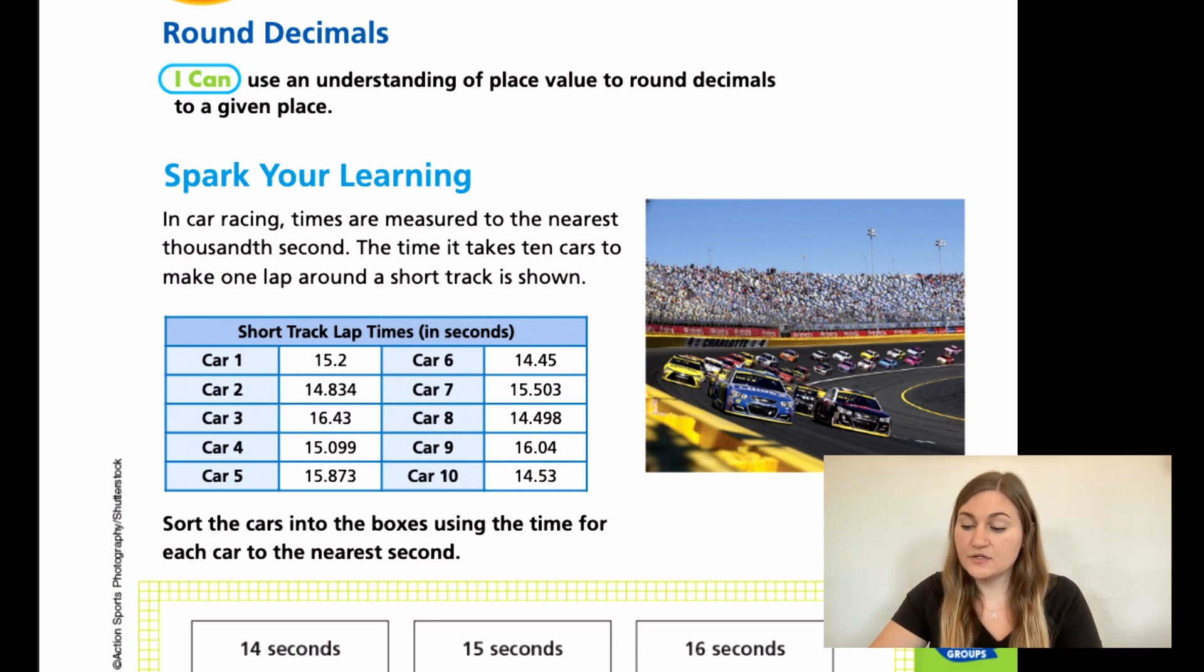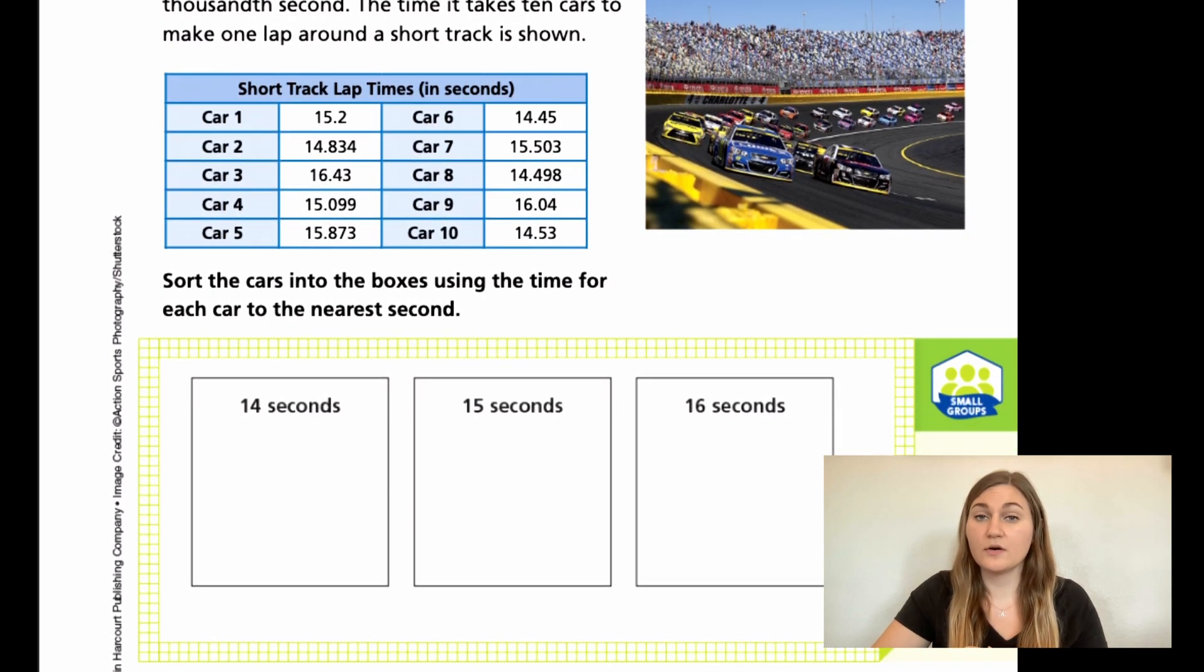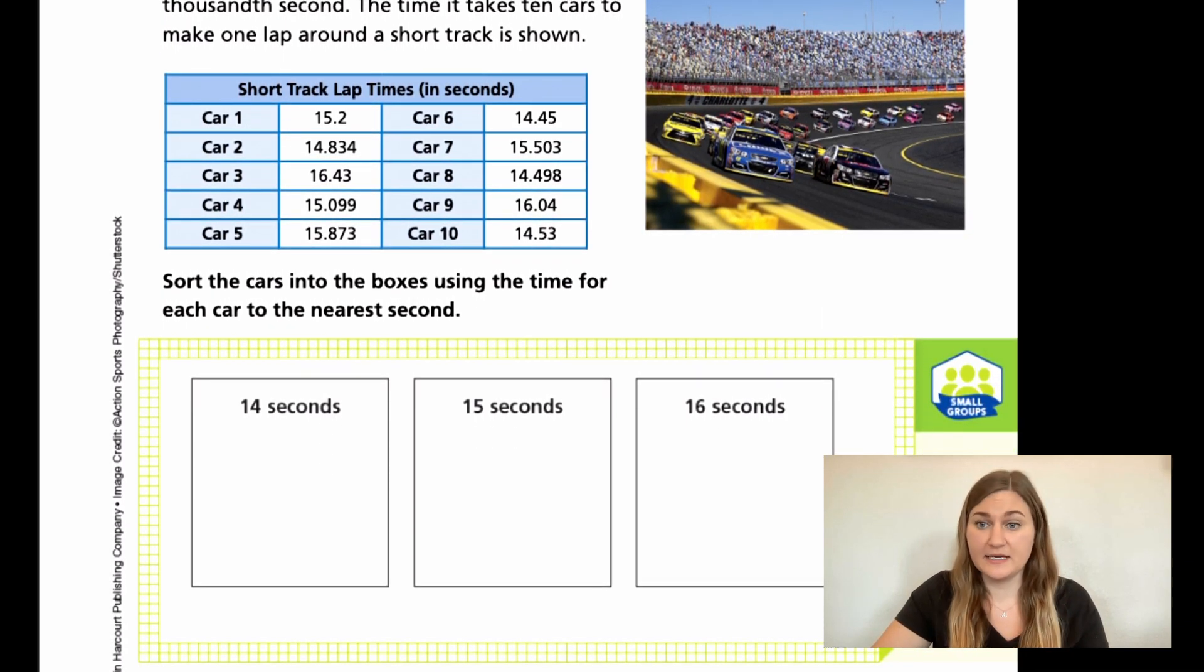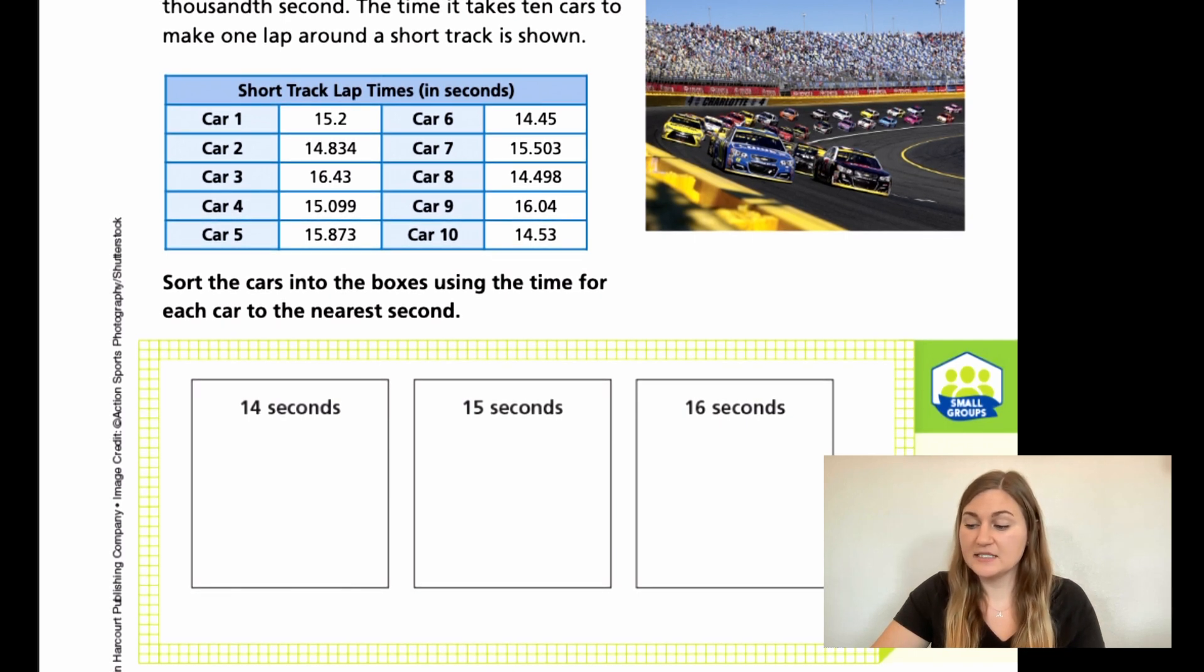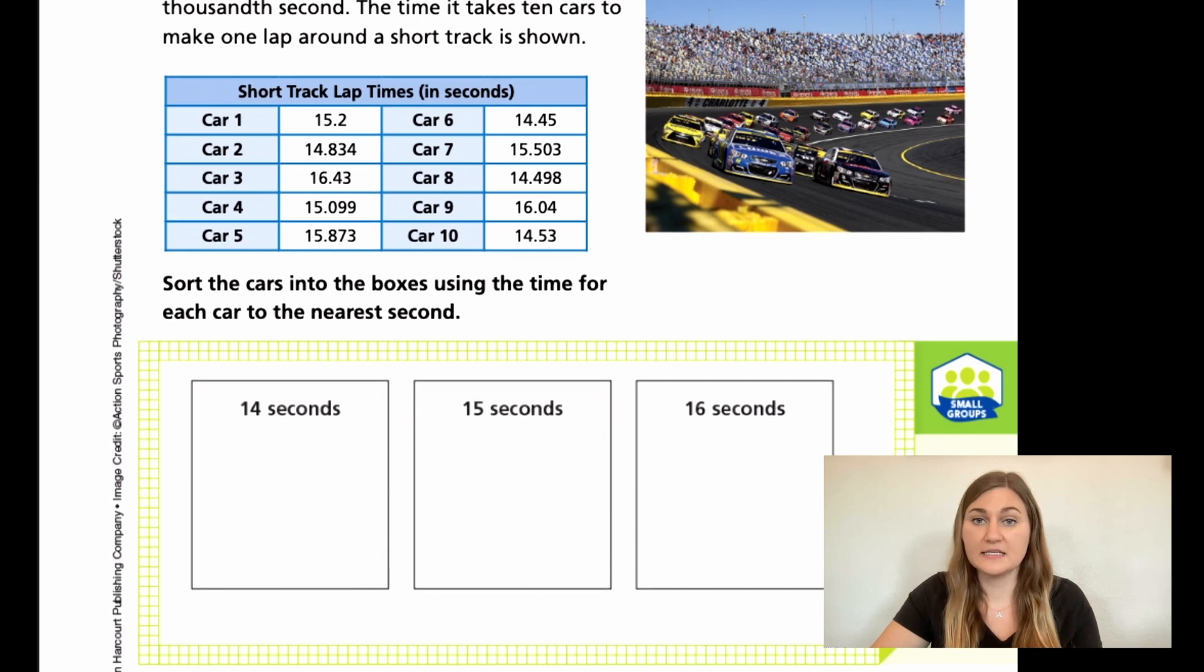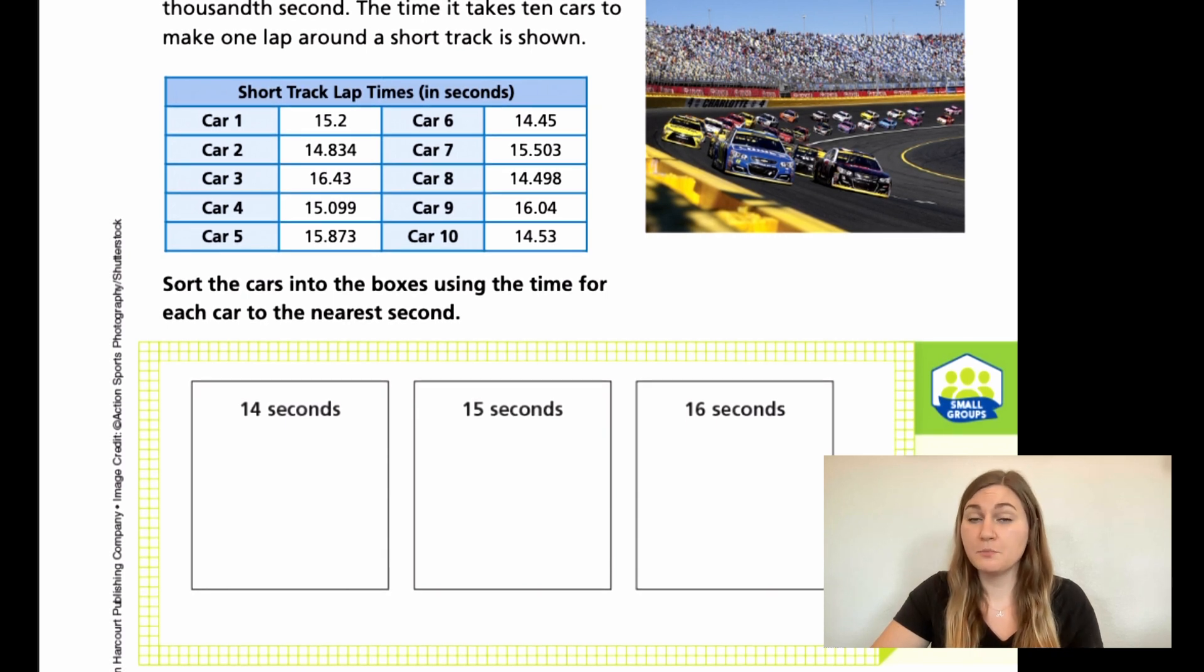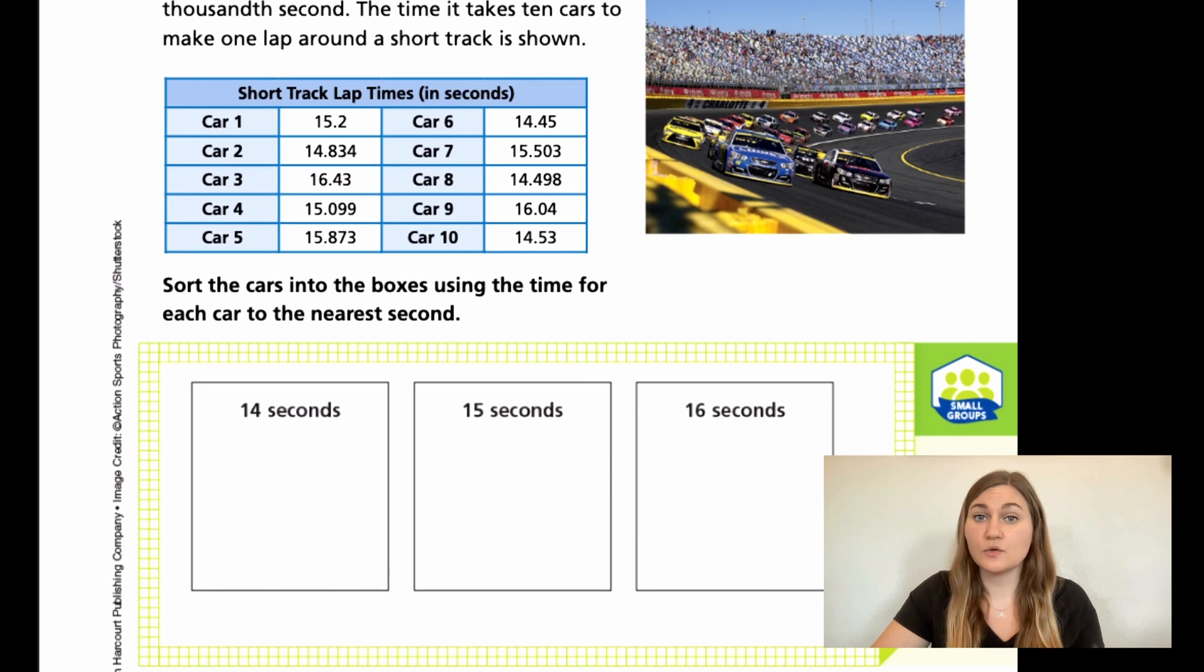So then underneath it says sort the cars into the boxes using the time for each car to the nearest second. So when it's asking for the nearest second, it's asking us for the nearest whole number or going to the ones place. So underneath we have three boxes that say 14 seconds, 15 seconds, and 16 seconds. We're just going to organize which cars go in which box by rounding to the nearest ones place or whole number.